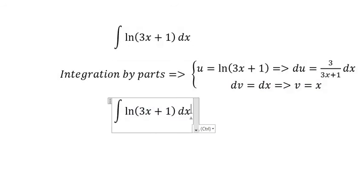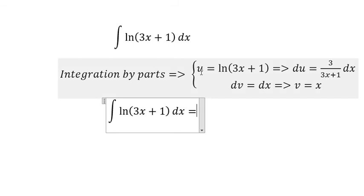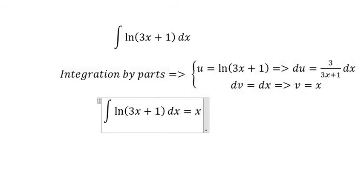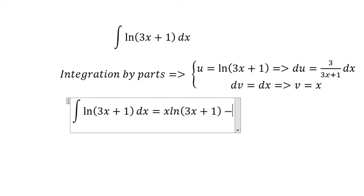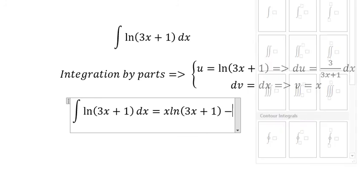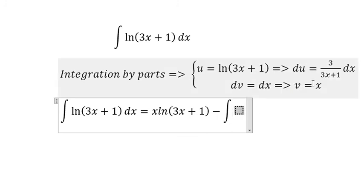So we have u multiplied with v, which gives us x·ln(3x+1). And we have the negative of the integral, so we have the integral of 3x/(3x+1)dx.